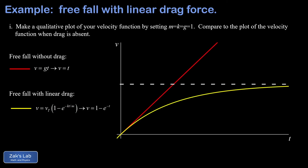Looking at limiting cases in the graph: when t is very small, the free fall with drag aligns almost exactly with free fall without drag, because the speed is still small and the drag force is negligible. As speed grows, the drag force becomes significant and the slope of the velocity curve decreases — the net force gets smaller. For large t, the velocity levels off to a horizontal asymptote at the terminal velocity, where the drag force balances gravity and the object falls at constant speed.